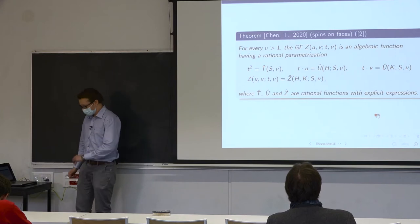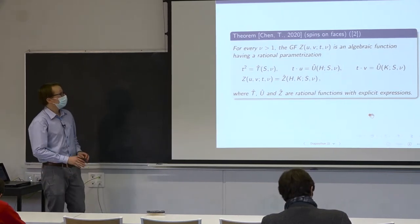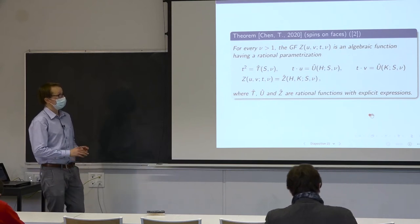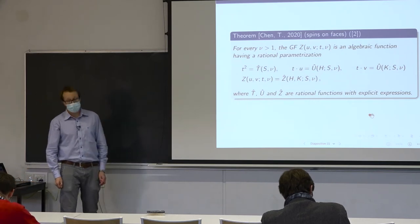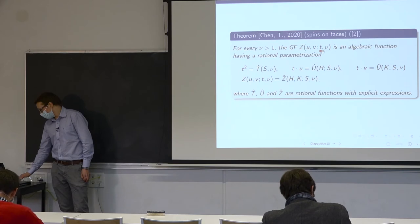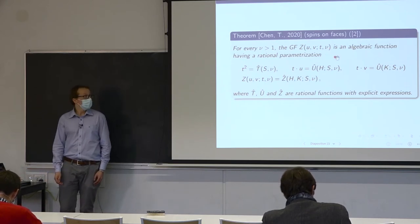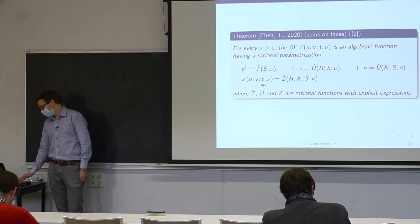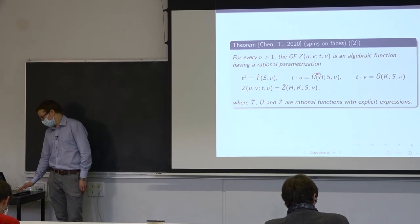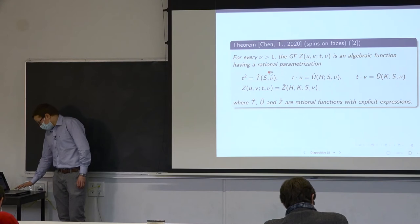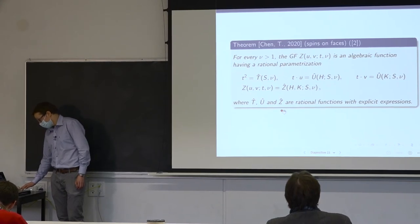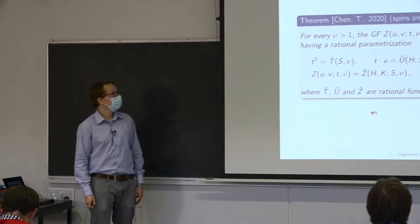We further encode the partition functions by a generating function with two catalytic variables u and v, summing over all positive boundary lengths. This generating function is the key object for studying asymptotics of the partition function when p and q are large, with the hope of obtaining some half-plane infinite triangulation. Our first result: for any positive temperature (nu greater than one, corresponding to the ferromagnetic Ising model), this generating function is an algebraic function with an explicit rational parameterization.